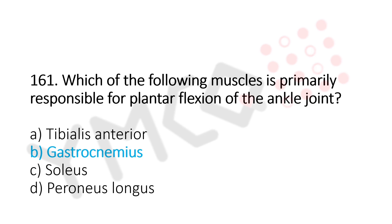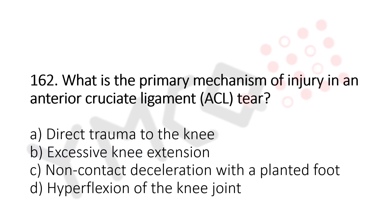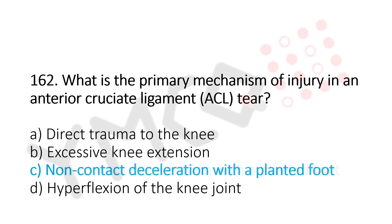Let's move to question number 162. What is the primary mechanism of injury in an anterior cruciate ligament tear? Option A, direct trauma to the knee. Option B, excessive knee extension. Option C, non-contact deceleration with a planted foot. Option D, hyperflexion of the knee joint. And the answer is Option C, non-contact deceleration with a planted foot.